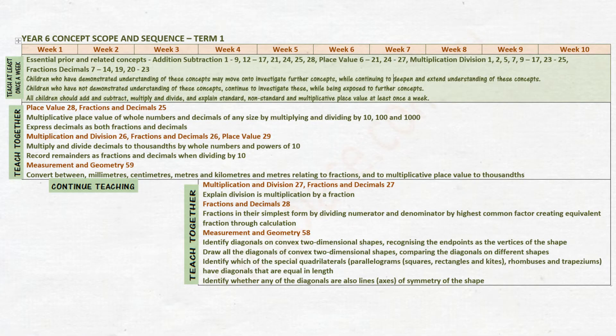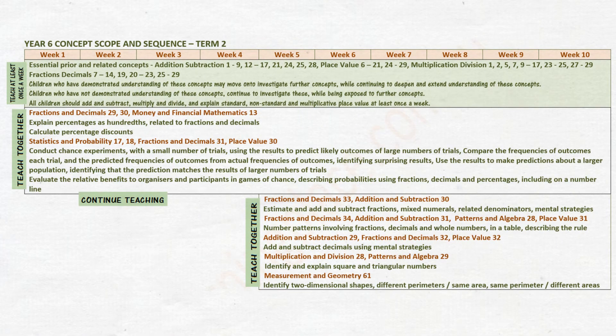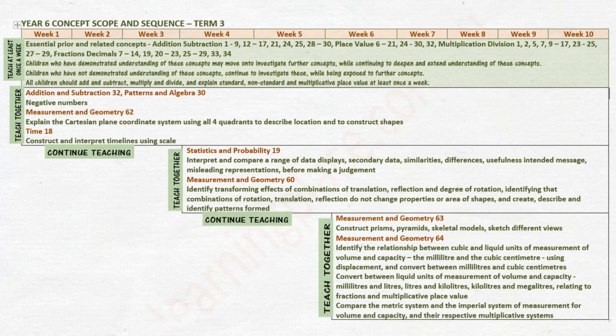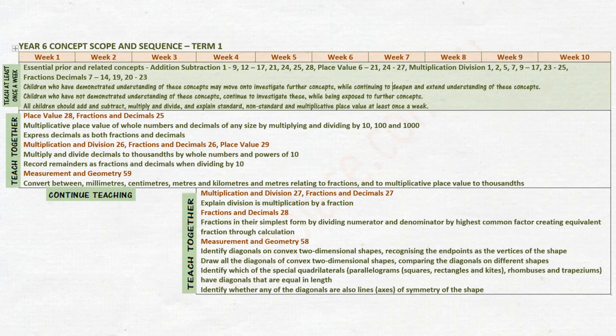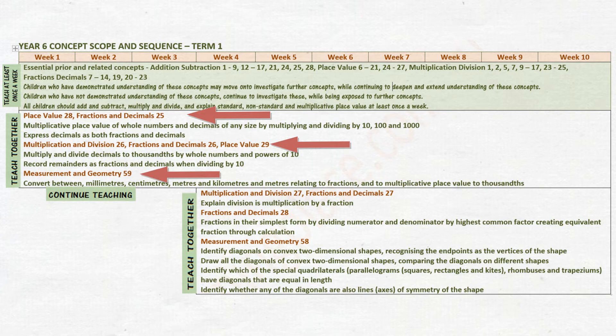Pages 2 to 5 contain a term-by-term sequence of concepts taught in Year 6. Each term presents essential prior concepts from the previous year and terms. Each term scope and sequence is divided into weeks, with essential prior concepts being taught first and essential related concepts being taught together. For example, multiplicative place value of numbers to any size and converting between metric units of measurement in the same time frame.